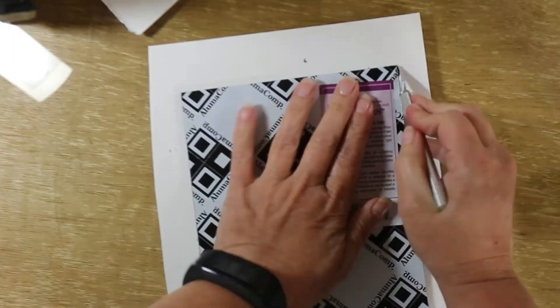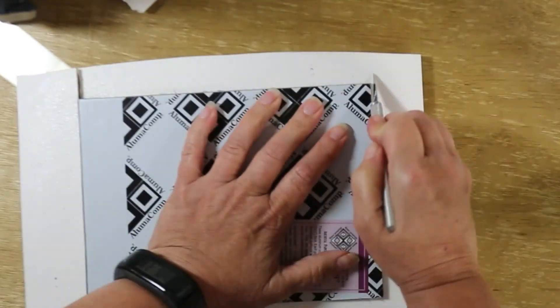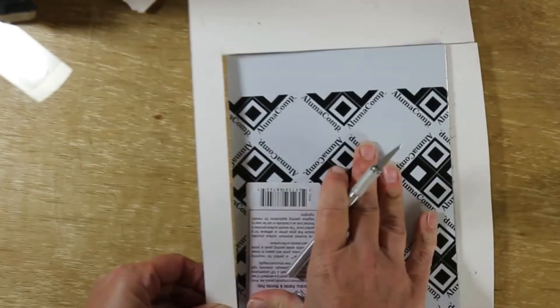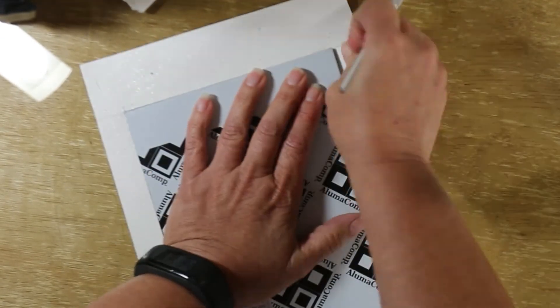After the paper dries, you're going to need to cut off the excess paper. And I just use an exacto knife for this because I use 300 pound paper though. It was very difficult and I don't think my blade was quite sharp enough. So I had to do it quite a few times.